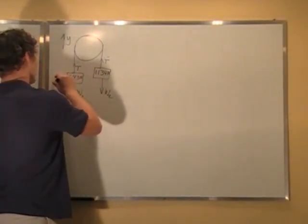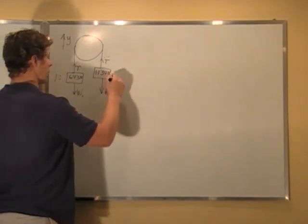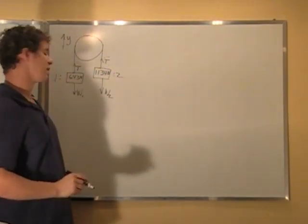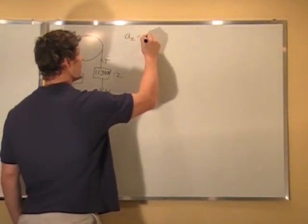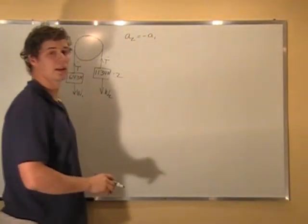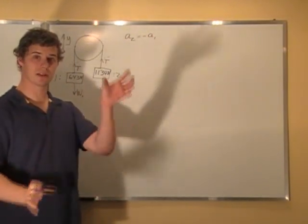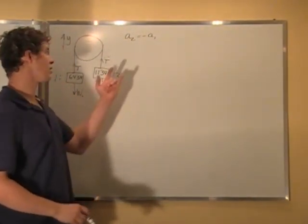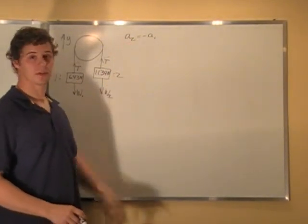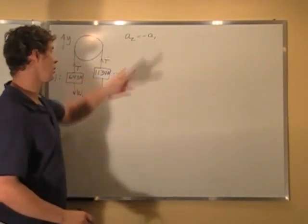So since this is block one and this is block two, we can say that a2 is negative a1. They are connected by a pulley. They are going to go the same distance. The distance relation is the same. So the accelerations are going to be the same except negatives.